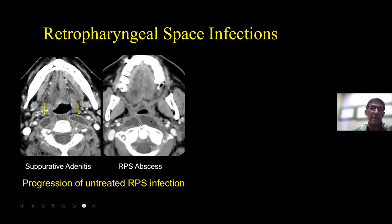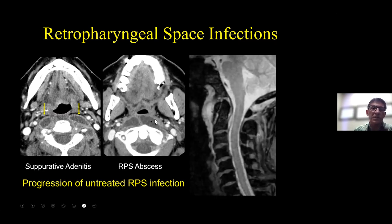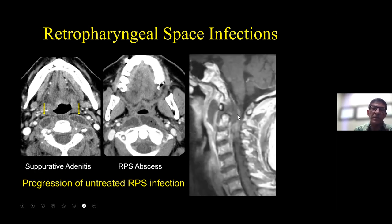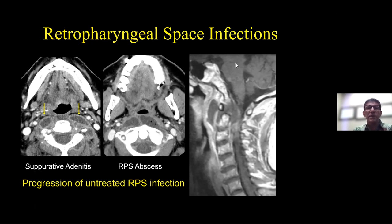Then as they grow — I think of them like water balloons — as they get bigger and bigger, the water balloons pop, and you end up getting pus in the retropharyngeal space. This is a true retropharyngeal space abscess. When you have a retropharyngeal space abscess, if it gets worse and worse, it can grow posteriorly and erode into the top of the spine, specifically at C1 and C2. Here we see the retropharyngeal space abscess extending posteriorly to involve the spine and even the epidural space. That's the difference between suppurative adenitis and retropharyngeal space abscess.